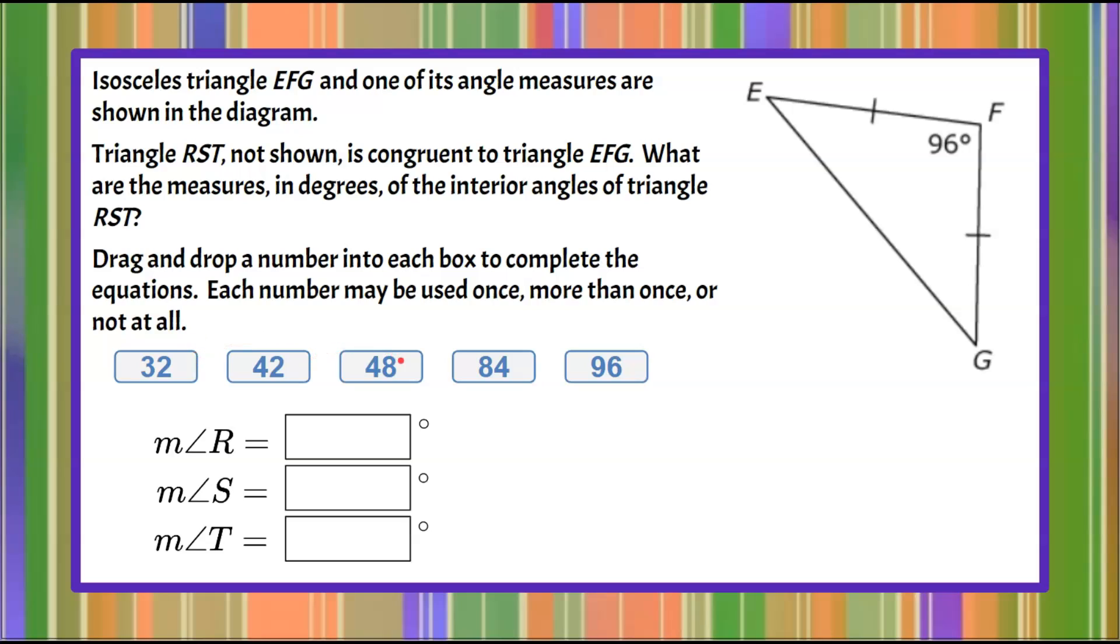So you're given five number choices to pick from and we need to determine what the measure of angle R is, the measure of angle S, and the measure of angle T from these five answer choices.